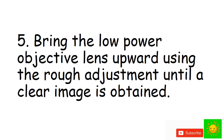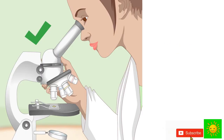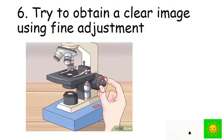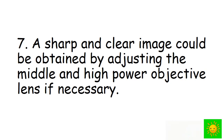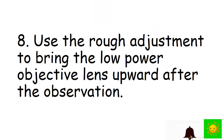Fifth, bring the low power objective lens upward using the coarse adjustment until a clear image is obtained. Make sure that both eyes are open during the process. Keep the eye at a distance of one centimeter to the eyepiece. Try to obtain a clear image using fine adjustment.